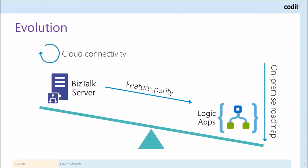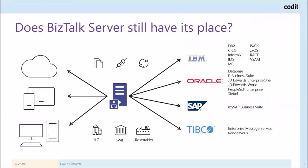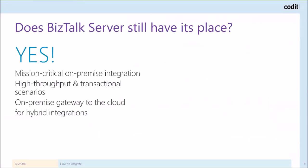BizTalk Server, thanks to feature packs on the next version, will have some additional cloud connectivity, but the biggest focus will be on platform alignment with BizTalk Server 2019 — aligning with the latest Windows Server, the latest SQL Server, and the latest Visual Studio version. One might ask: does BizTalk Server still have its place? And the answer is definitely yes. An integration platform typically moves together with your application landscape, so if most of your core ERP systems are still running on premises, it still makes sense to have BizTalk Server doing the integration there.